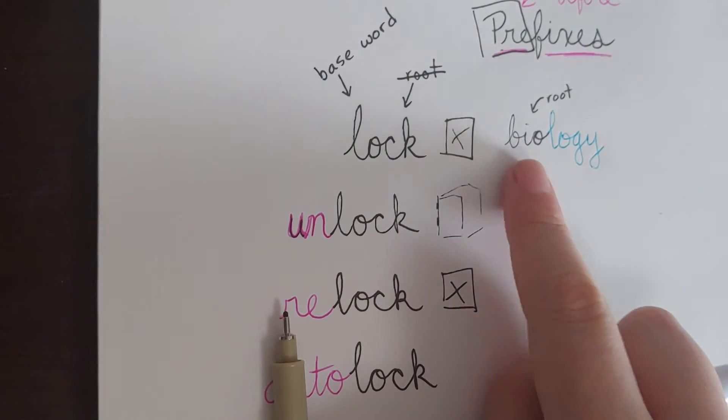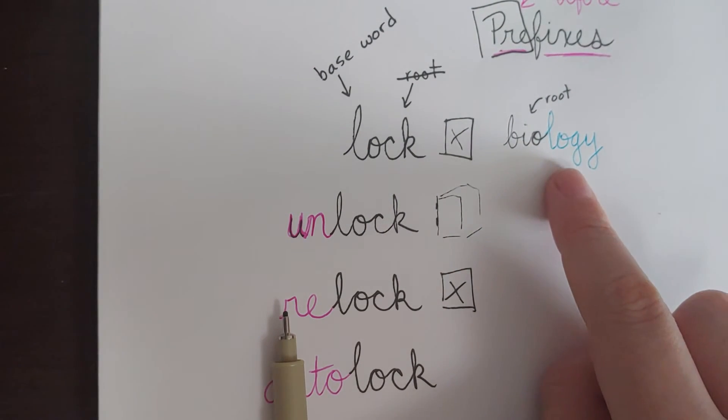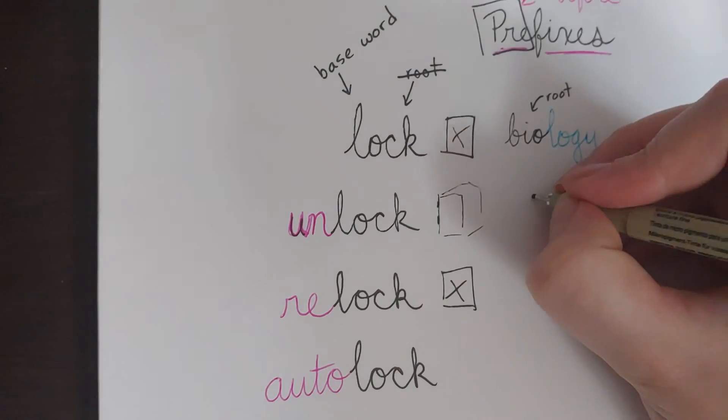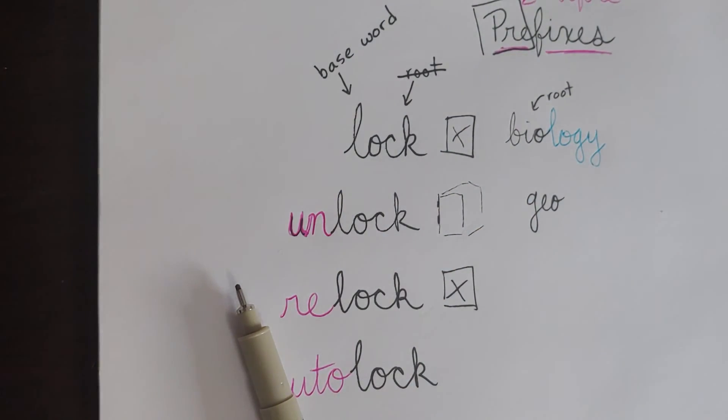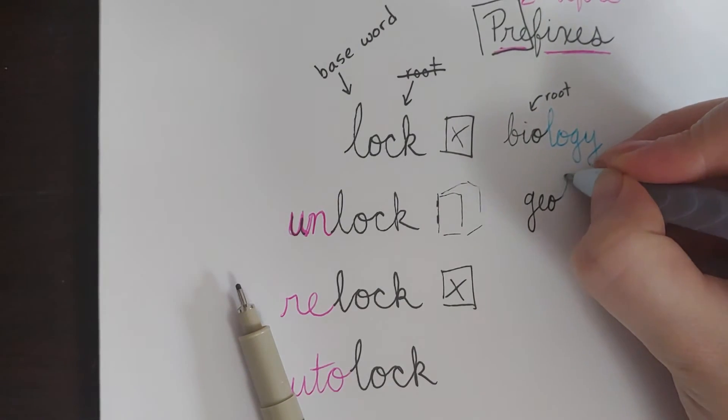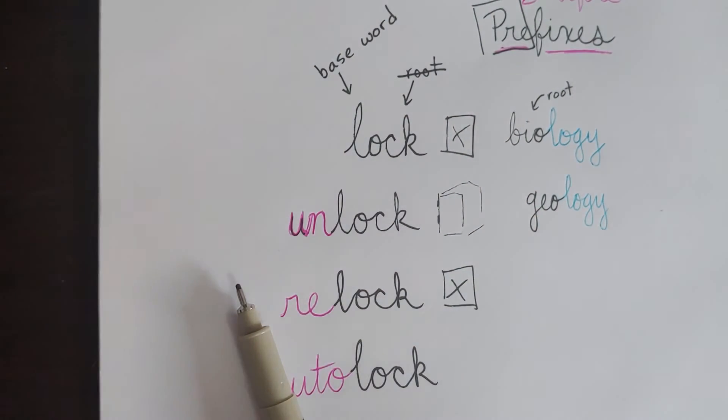Suffix means at the end. Bio is our root. We know that means life. Ology means the study of, so bio and ology. Biology means the study of life. Geo means the planet or earth. And if we say geology, then that means the study of the planet or earth.